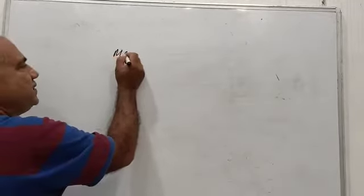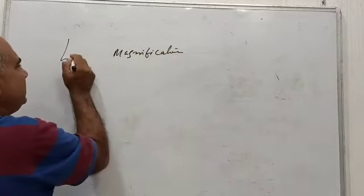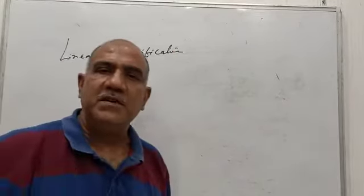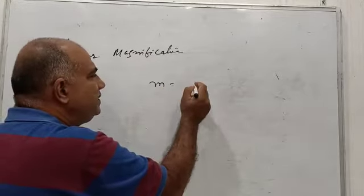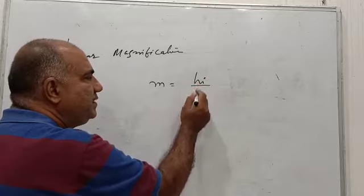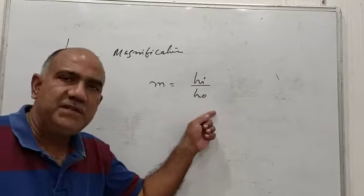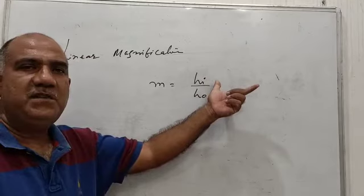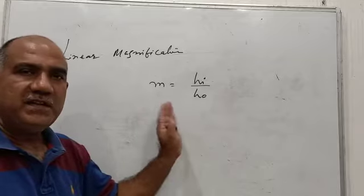We are going to study what is magnification, or linear magnification produced by a mirror. Magnification is nothing but the ratio of the height of image to the height of object. I write HI for height of image and HO for height of object. Books may refer to these as H1 and H2, but I always write HI and HO. So linear magnification produced by a mirror is HI upon HO.